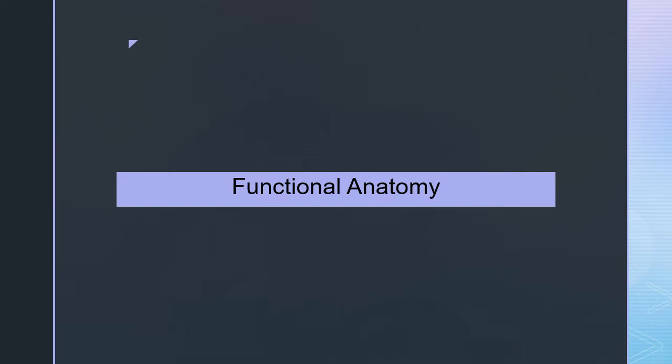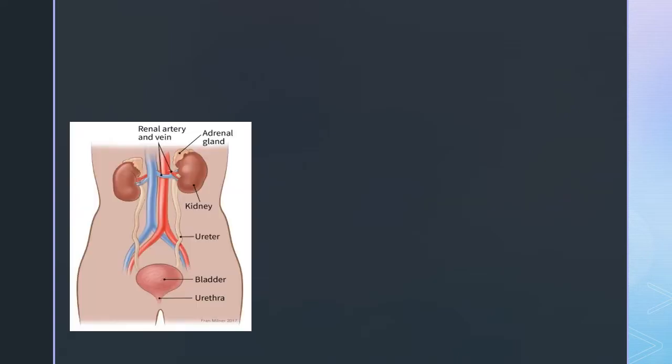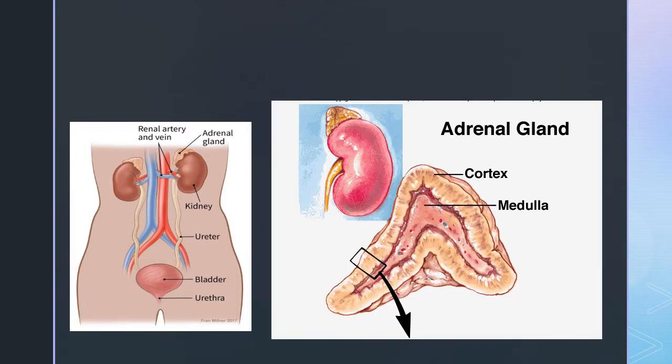Functional anatomy: The human adrenal glands each weigh only 4 grams. Each is located above the upper pole of each kidney in the retroperitoneal space. Each gland is composed of two major parts: the adrenal medulla and the adrenal cortex.